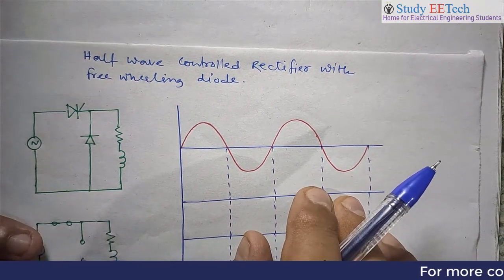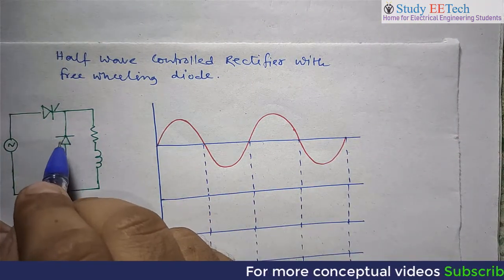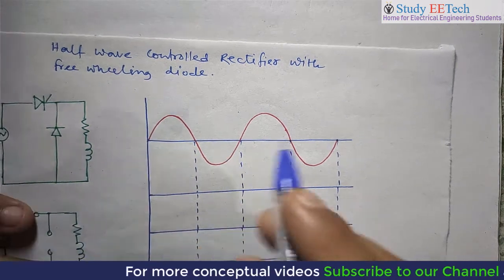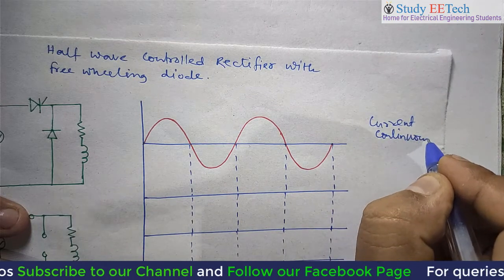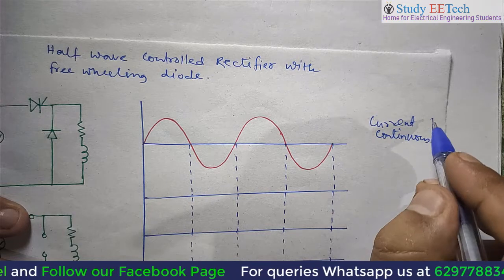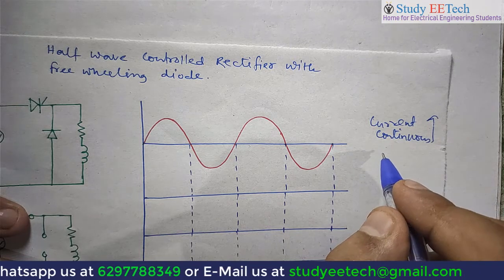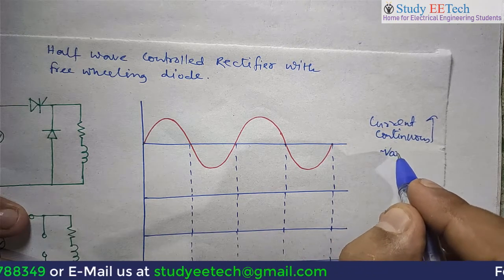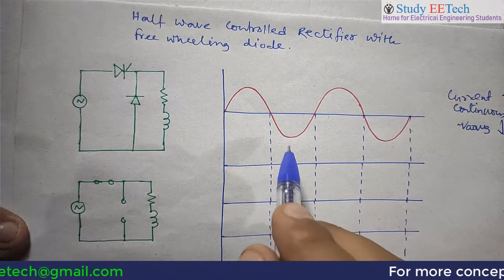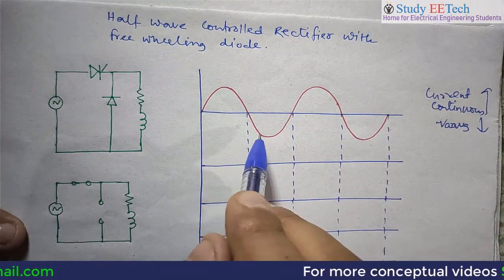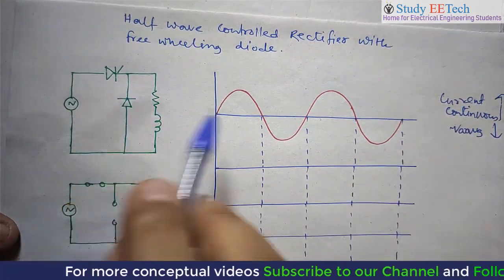In the previous video we raised a problem: with RL load without the freewheeling diode, the current became continuous, which was desirable. But at the same time, the average output voltage VO was decreasing because negative swings were appearing on the load side, making the average voltage decrease.